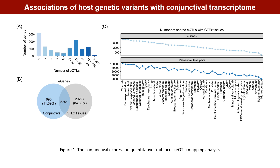Thyroid has the highest number of shared E genes with conjunctiva, followed by sun-exposed skin, tibial nerve, non-sun-exposed skin, and esophageal mucosa.